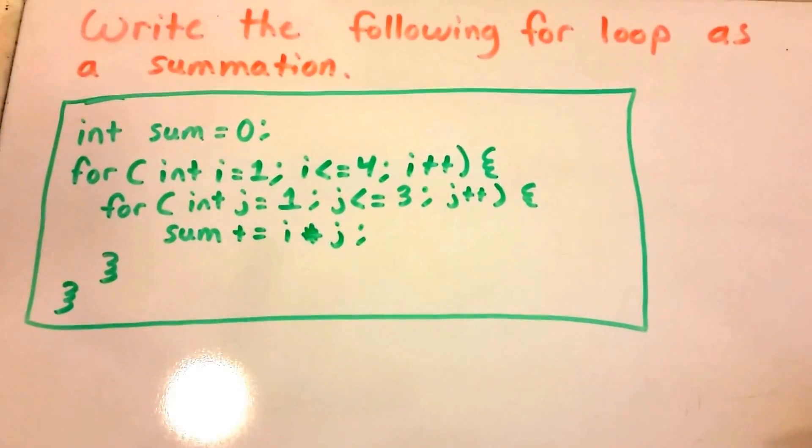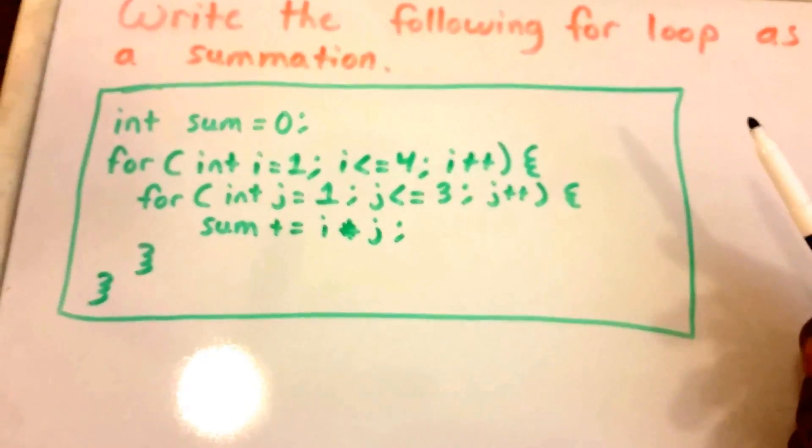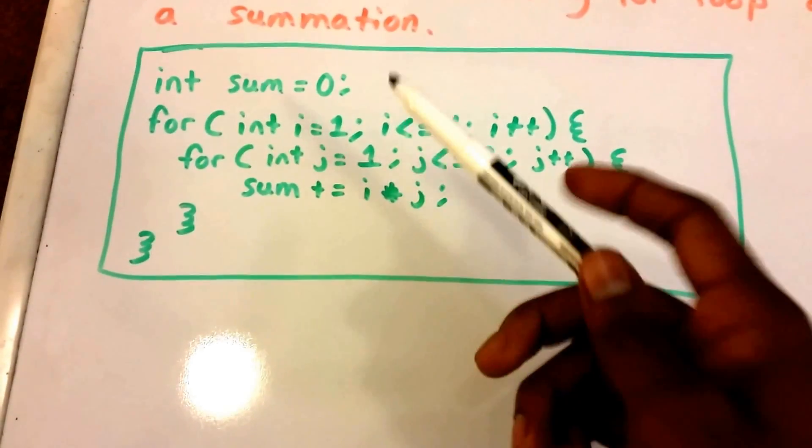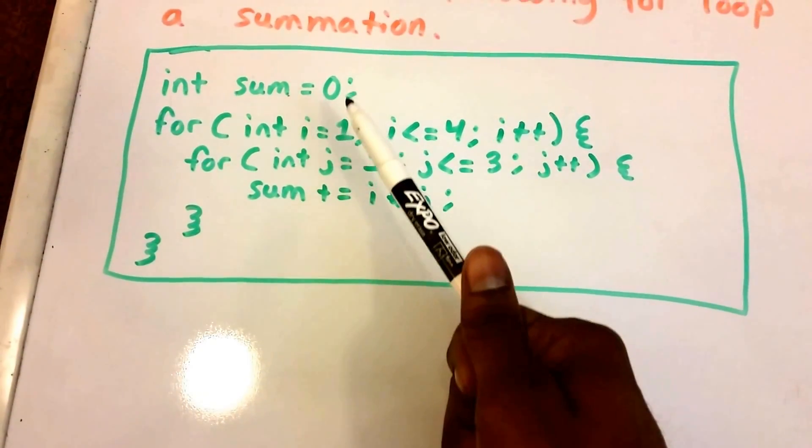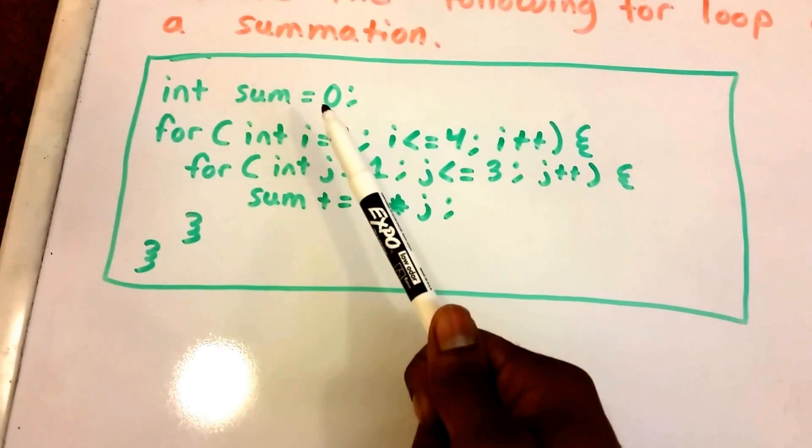Hey guys, welcome to this video on algorithm analysis. So here we want to write the following for loop as a summation, and I have the for loop in green in this rectangular box here. It says int sum equals 0, so we have a variable called sum, it's an integer, and we're setting the value to 0.